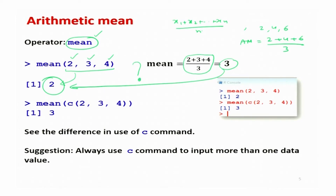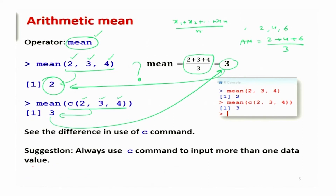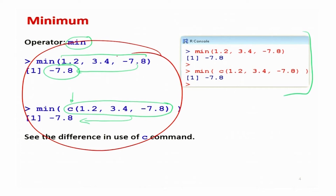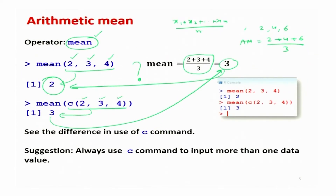Now I change my approach and use the data vector approach, giving the input data using the command c — writing c(2, 3, 4). Now the mean comes out to be 3, which matches the manually computed arithmetic mean. So in the case of max and min there was no difference, but for mean, using the c command gives the correct answer.